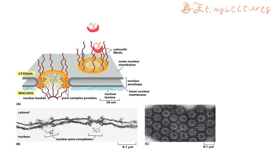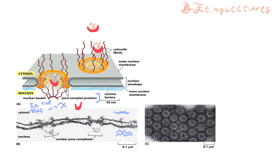Eventually protein X and the transporter are dissociated — they break apart — and protein X ends up within the nucleus. The nuclear pore complex is a collection of proteins within the cytosolic fibrils and nuclear pores that allows protein X and its carrier to be disassociated and permits protein X to enter the nucleus.